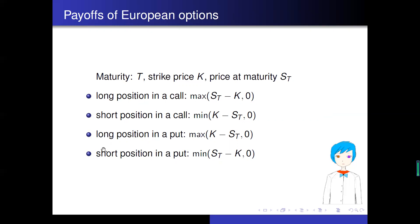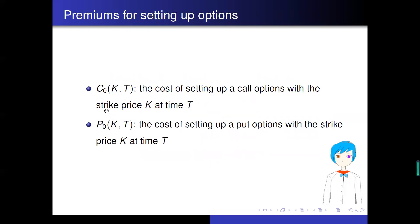The payoff for the long position in a European put option is the maximum of K minus S(T) and zero. The payoff for the seller of a European put option is the minimum of S(T) minus K and zero. Because the payoff for the holder of options is always non-negative, the holder has to pay a premium. We denote the cost of setting up a call option with strike price K and time T as c₀(K,T), and the cost of setting up a put option with strike price K at time T as p₀(K,T).